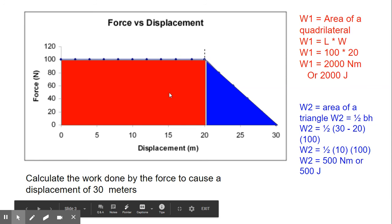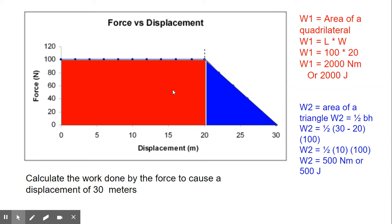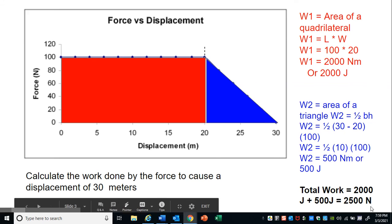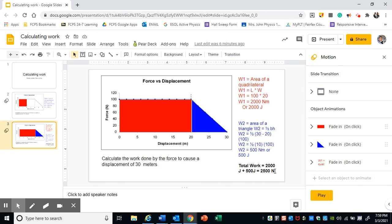So you have calculated the area under the quadrilateral and the area under the triangle. To find the total work, you simply add the two areas. So 2000 joules plus 500 joules is equal to 2500 newton meters, or joules.